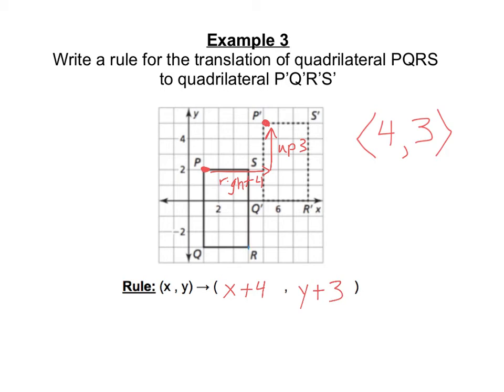So for example, if I had used R and R', I would want to look at how many do I move to the right to get to R', and it's still 4 right and 3 up. So it doesn't matter which point you pick, just as long as you pick a point in the pre-image, and then its same point with the prime symbol in the image.